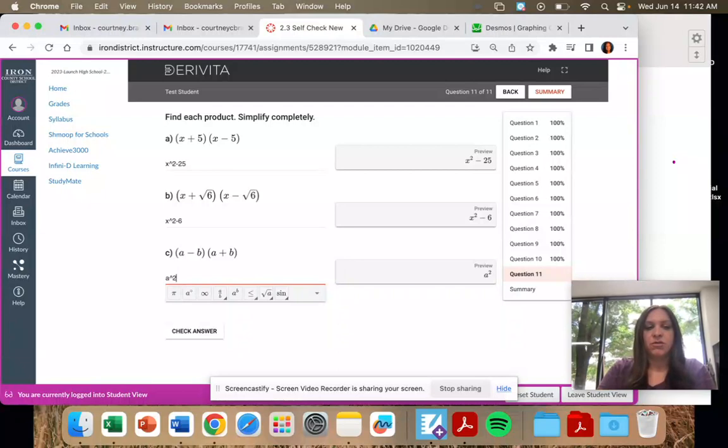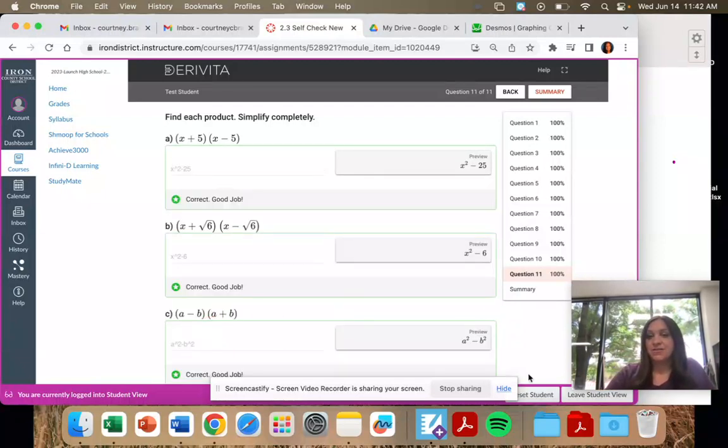And then this is just our general form. A squared minus B squared. And that is it for that section.